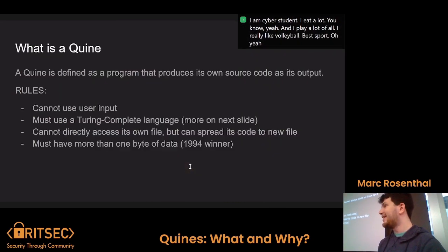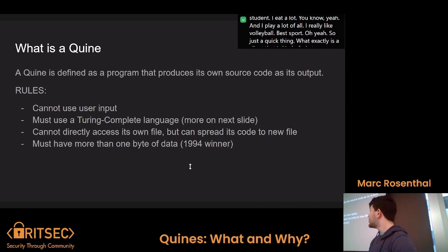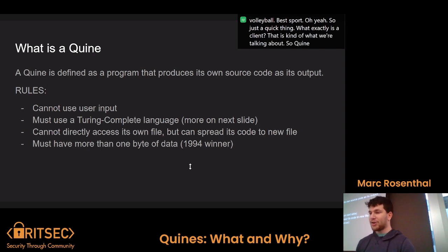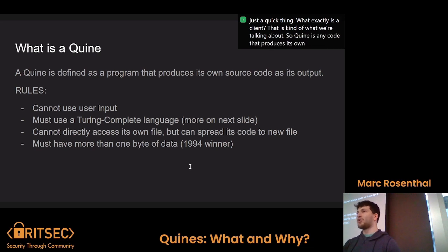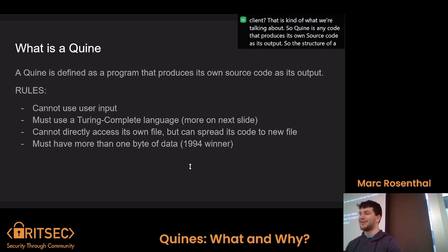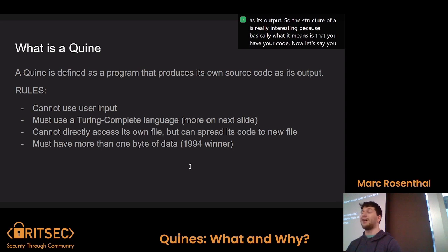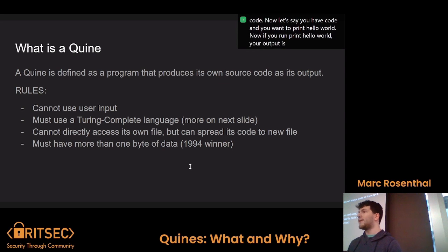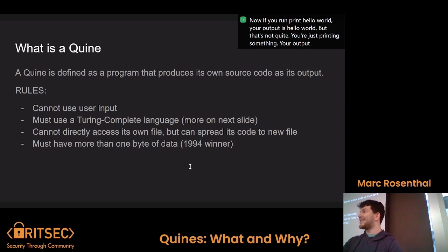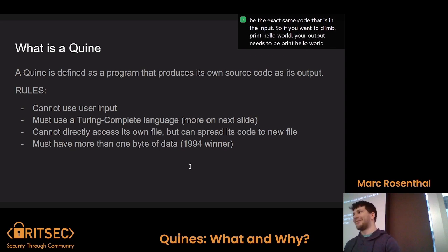So, just a quick thing — what exactly is a Quine? That is kind of what we're talking about. A Quine is any code that produces its own source code as its output. The structure of a Quine is really interesting. If you want to print hello world, you run print hello world and your output is hello world, but that's not a Quine — you're just printing something. Your output needs to be the exact same code that is in the input. So if your code is 'print hello world,' your output also needs to be 'print hello world,' which makes it really interesting.